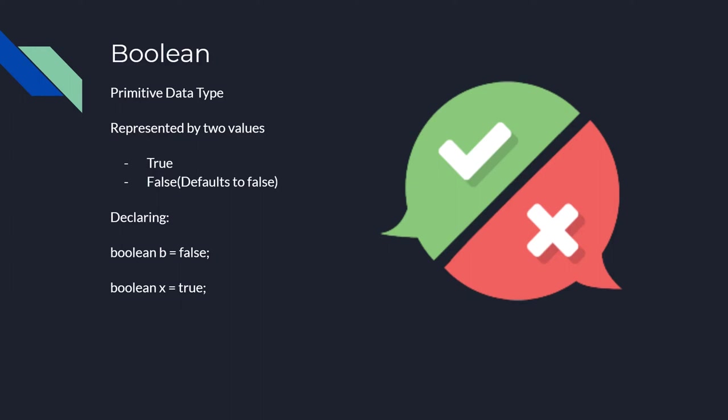Now onto booleans. These are a primitive data type and they're represented by two values: true or false — think of a true or false test with no in-between. One thing you must know is that if you do not assign a value, it will default to false. When declaring a boolean, you put the data type 'boolean', then a name such as 'b', then assign it either false or true. Also remember: don't start your variable name with a number — you can have a number after the first character, but not as the first one.